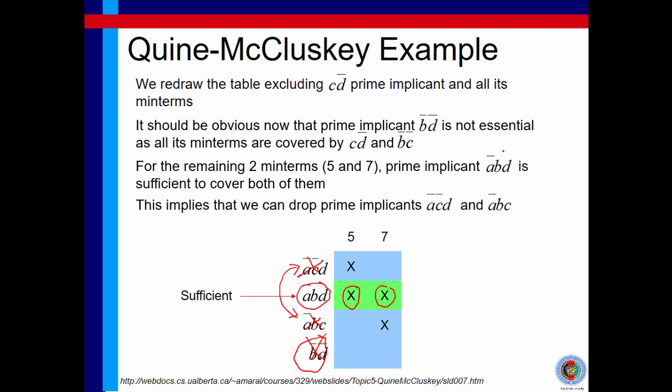Taking A bar BD is already sufficient for us to cover minterm 5 and 7. The other two are not needed, so we can drop the other two.